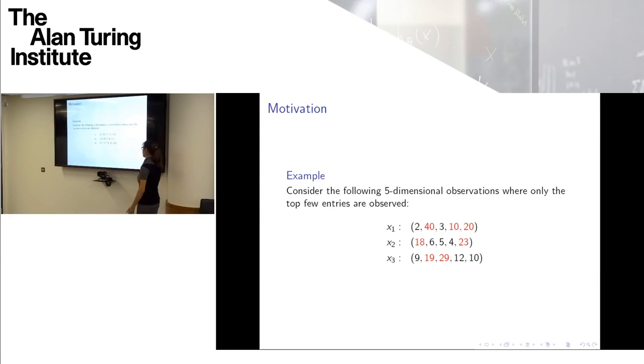So here's a simple example of what I mean, although I think my description was sort of self-explanatory. Imagine we have three observations. In this case, they're all five-dimensional. But in fact, we only observe the top three of the first one, the top two of the second one, and the top two of the third one. And the order here of where each digit appears is irrelevant. So each observation is, the dimensions are exchangeable. But the important thing is that you only observe the top few.